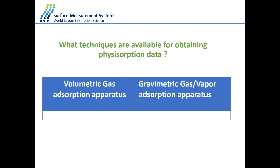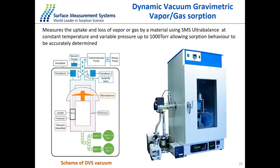How can we obtain physisorption data to characterize the catalyst? There are two main techniques: volumetric gas adsorption apparatus, typically used for BET or porosity measurements, and gravimetric gas vapor adsorption. The main difference is that in volumetric, we measure pressure changes — we dose the gas of interest like nitrogen and wait for pressure to equilibrate. In gravimetric, we continuously weigh the sample during changes in concentration of gas or vapor over the sample. I will mainly focus on the gravimetric vapor/gas adsorption analyzer — in this case, the DVS Vacuum.